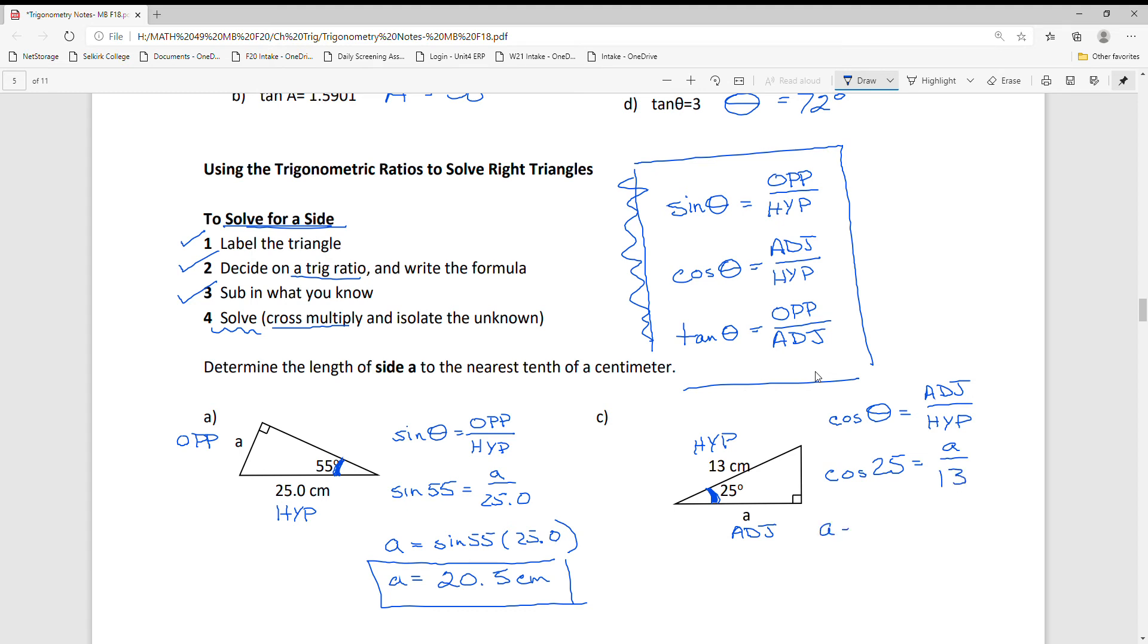Solving for A, A equals cosine 25 times 13. My calculator can evaluate that for me. Punching it in, I get 11.8 centimeters. In these ones I've gone with an arbitrary rule: we're going to round to the nearest tenth.